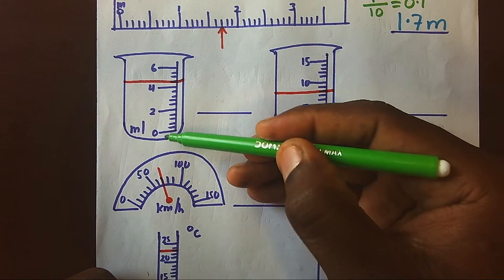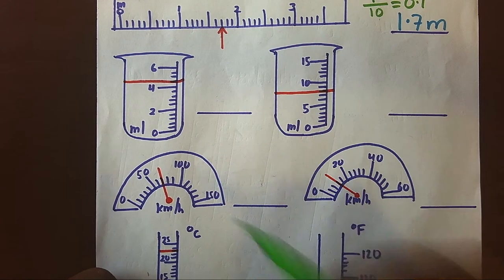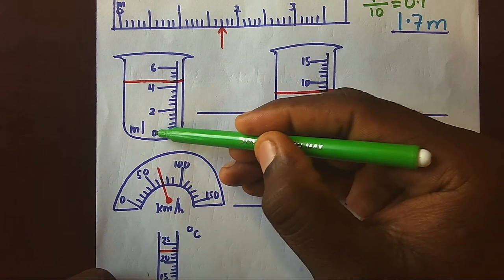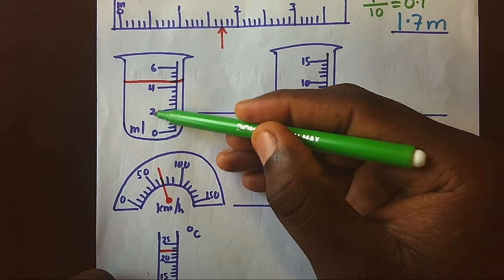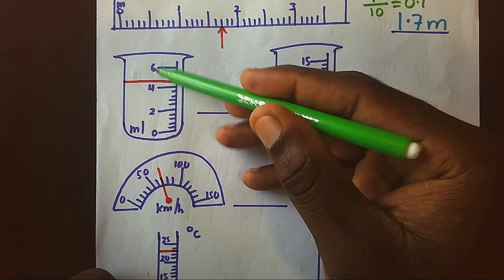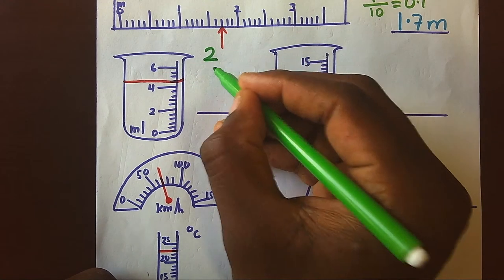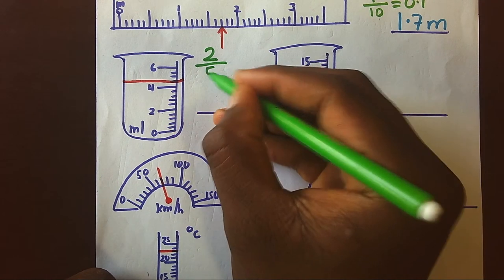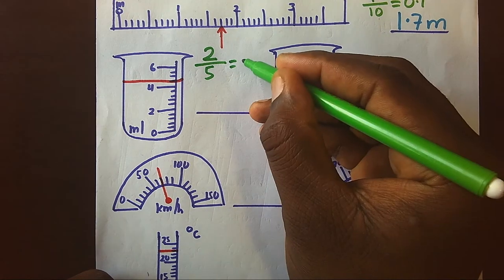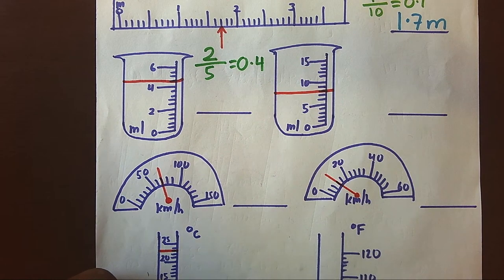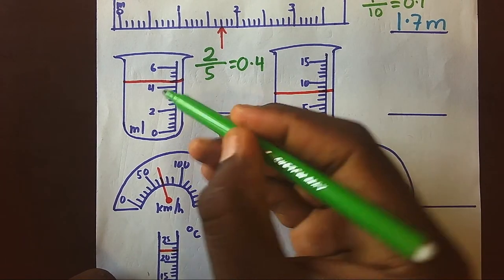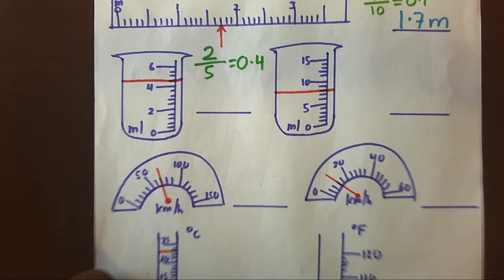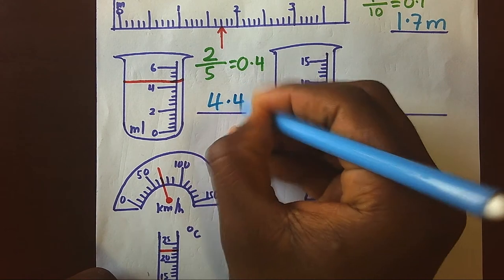And how many spaces between do we have? Five, meaning divide by five giving us for each gap it will be 0.4. Hence, if this main reading is four, then the next one will be 4.4. Let's go to a second video.